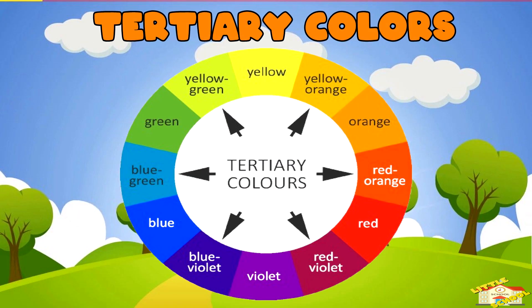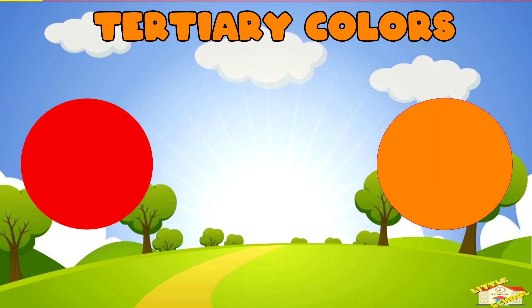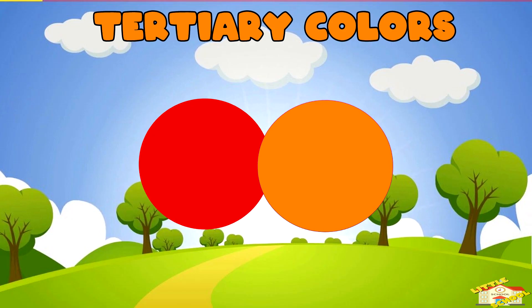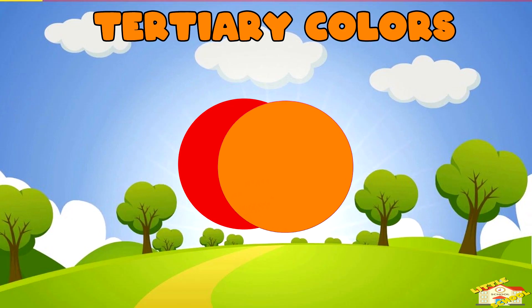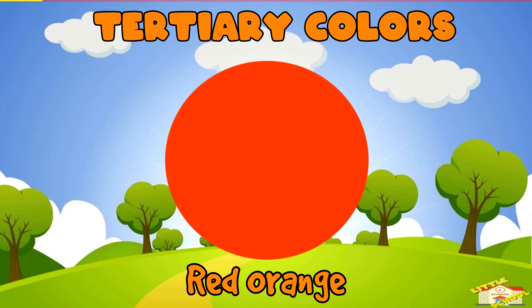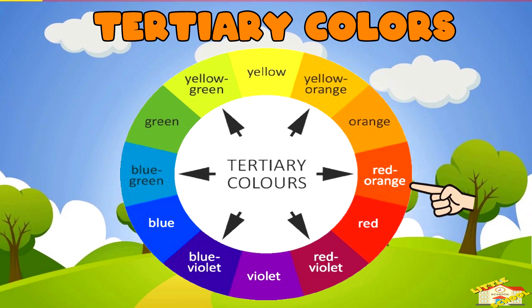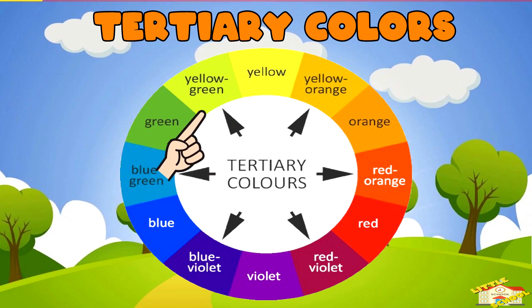Tertiary colors. Tertiary colors are created by mixing a primary color with a secondary color. Examples of tertiary colors are: red plus orange equals red-orange, and yellow plus green equals yellow-green.